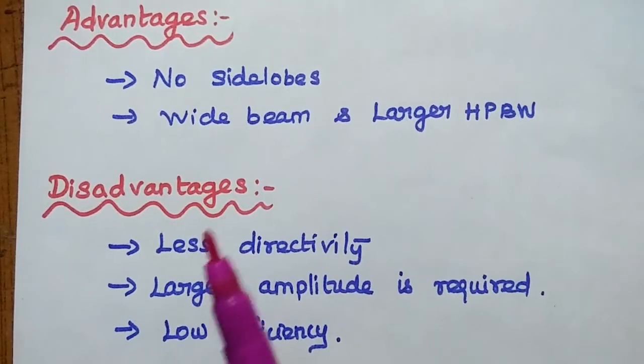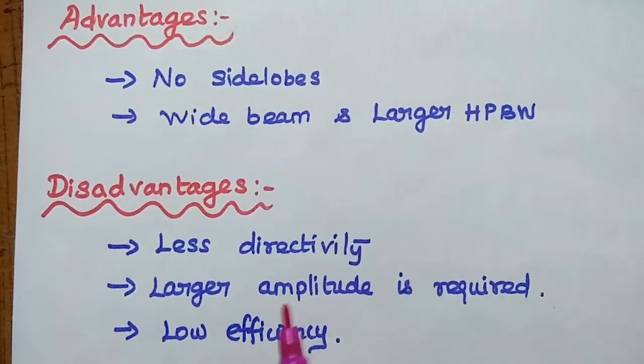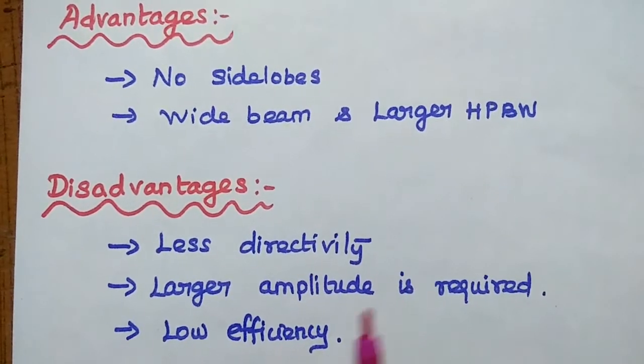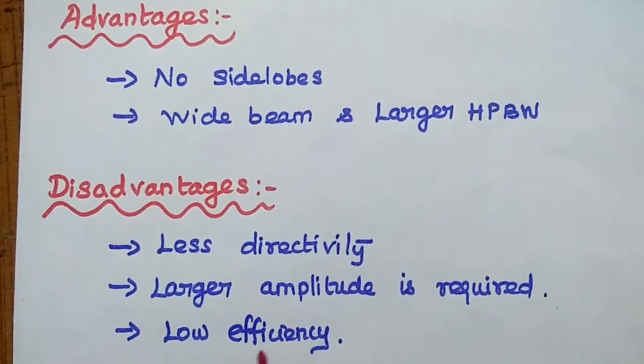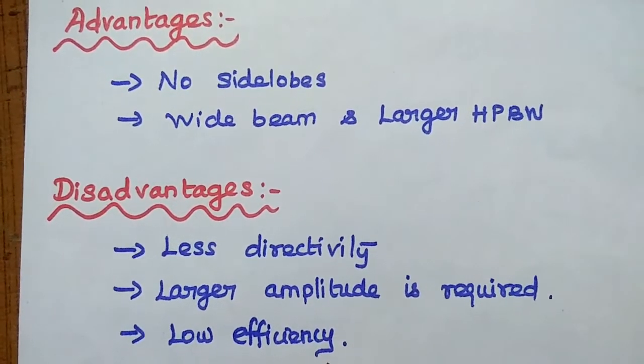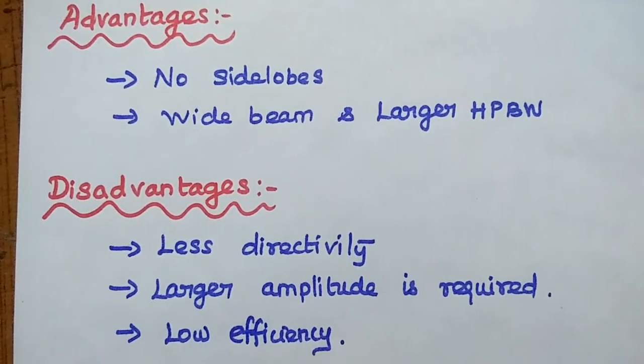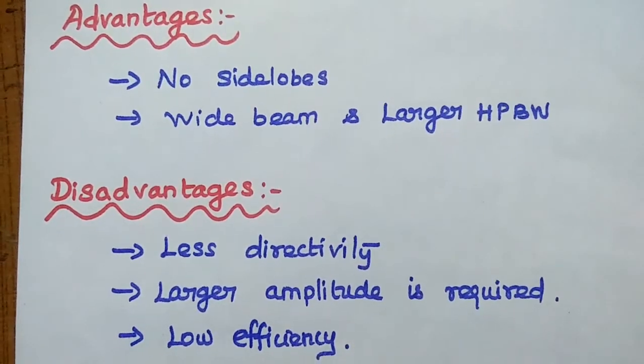The disadvantages are less directivity, larger amplitude is required for more number of antenna elements, and it provides low efficiency. If number of antenna increases, the efficiency is getting reduced. It is widely used in wide beam width related applications.